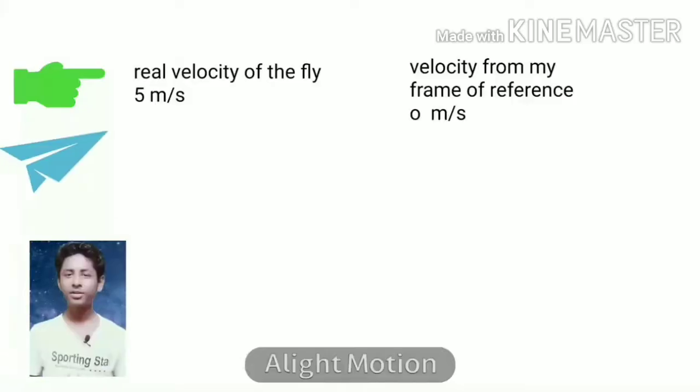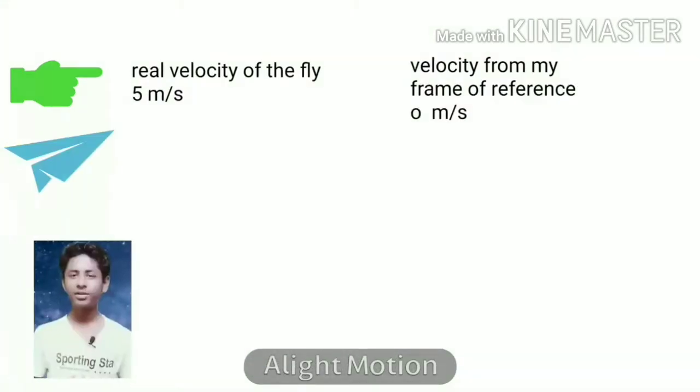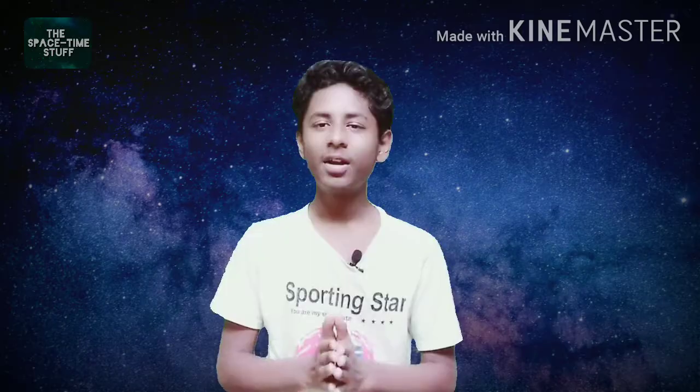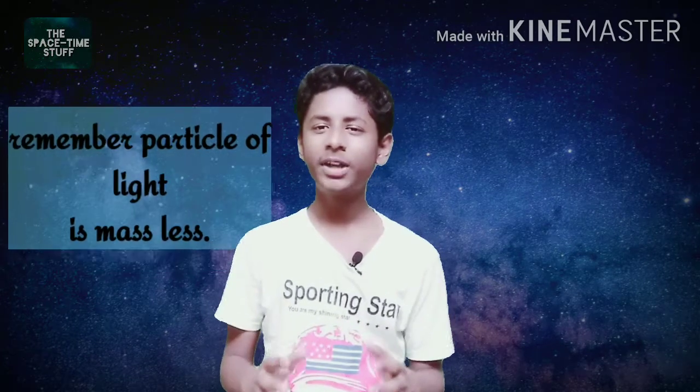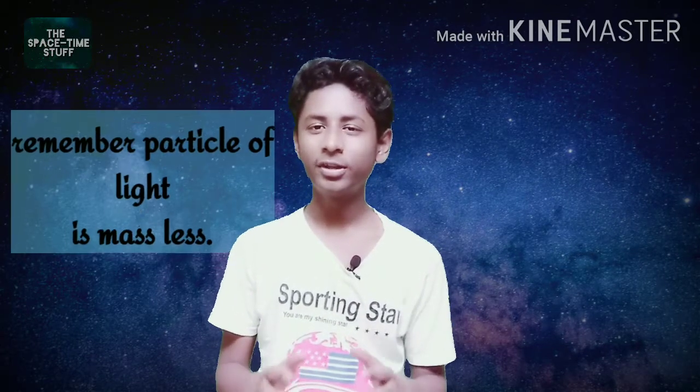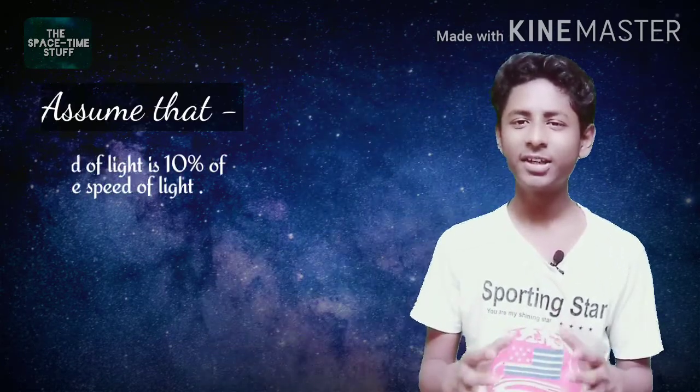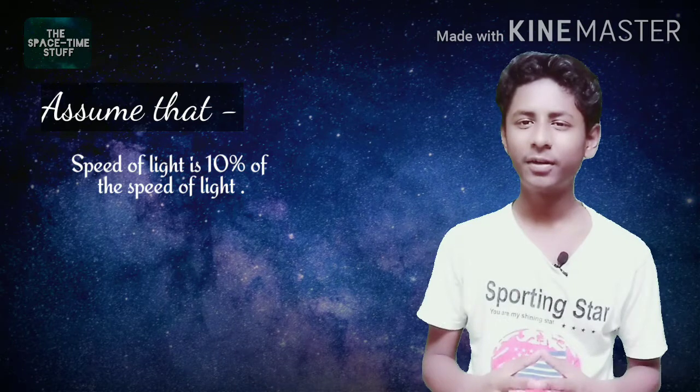That's not true for our day-to-day objects because motion is relative. Light is an exception in this case because we perceive light always traveling at the speed of light. Remember that the particle of light, the photon, is massless. Now assume for a moment that the speed of light is not the universal speed — let's say it is 10% of the speed of light.